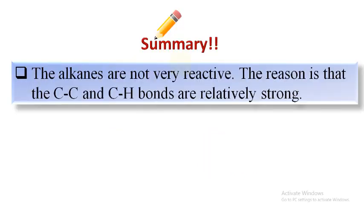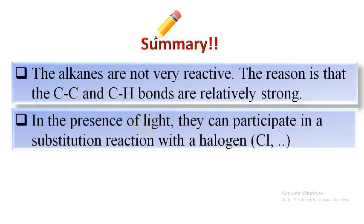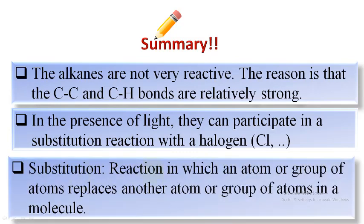The alkanes are not very reactive. The reason is that the C-C and C-H bonds are relatively strong. In the presence of light, they can participate in a substitution reaction with a halogen like Cl. A substitution reaction is a reaction in which an atom or a group of atoms replaces another atom or a group of atoms in a molecule.